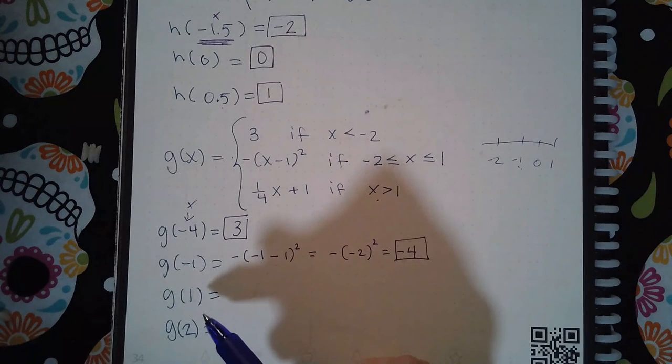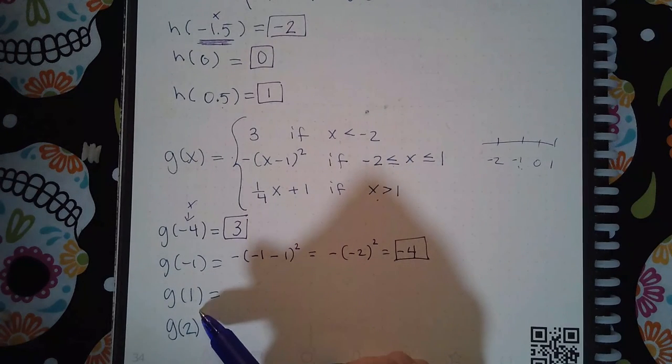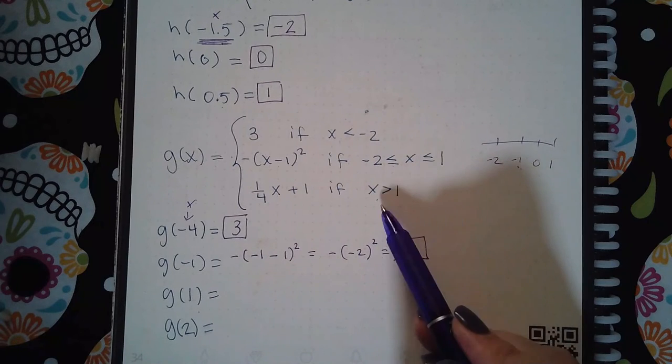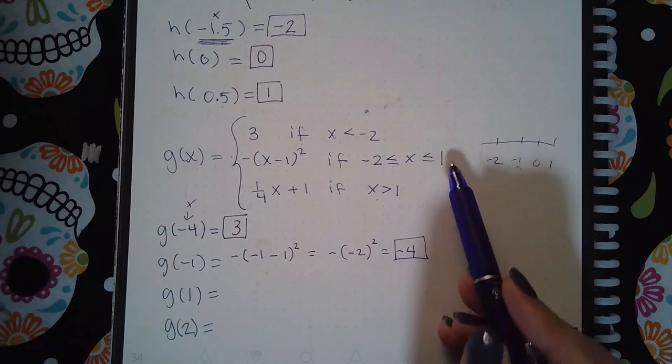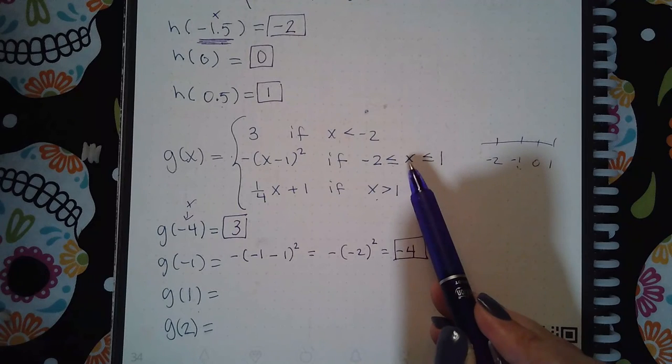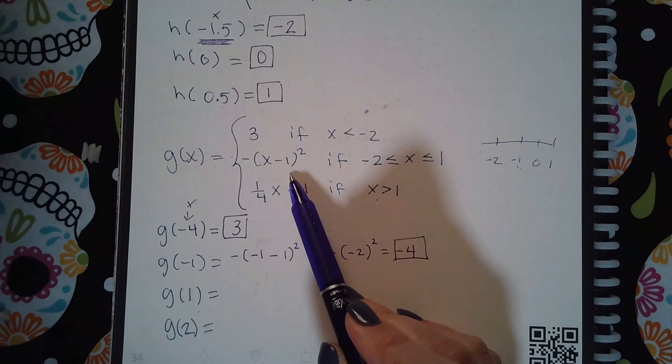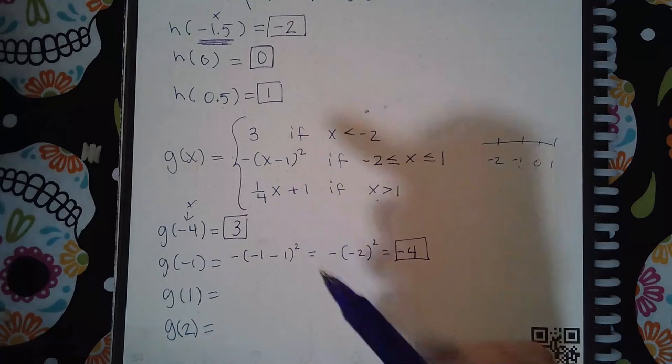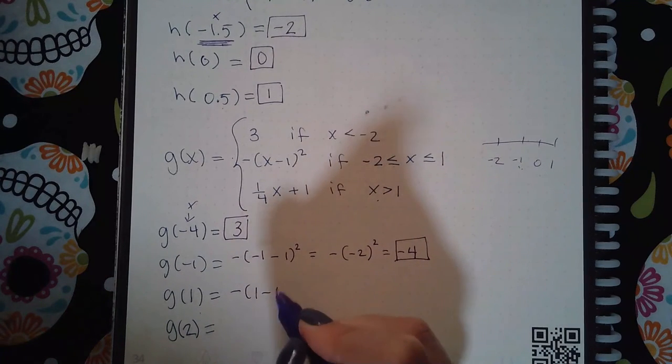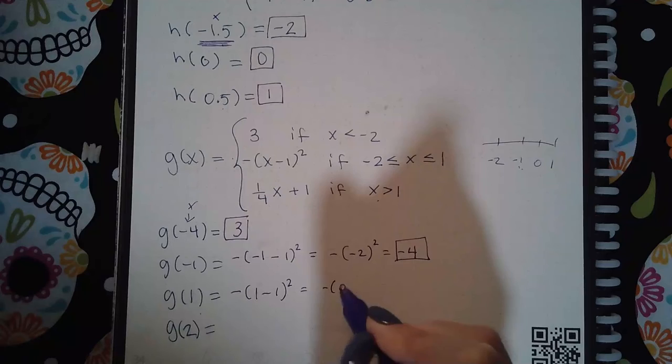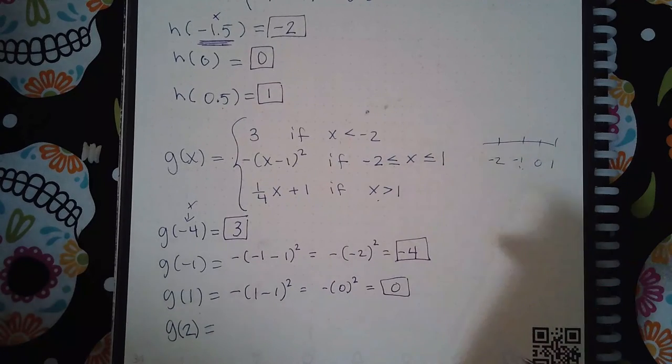Now here I'm going to plug in 1, x is 1, but there's two lines that have x with 1. However, this is the one where it says x can equal 1, so this is the expression that I have to plug 1 into, and when I plug in 1 I get negative of 0 squared which is just 0.